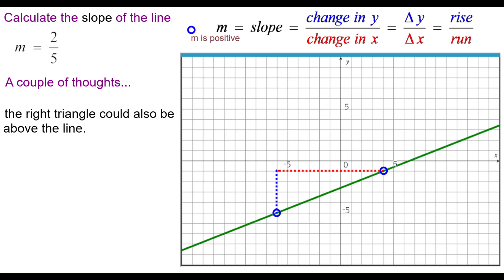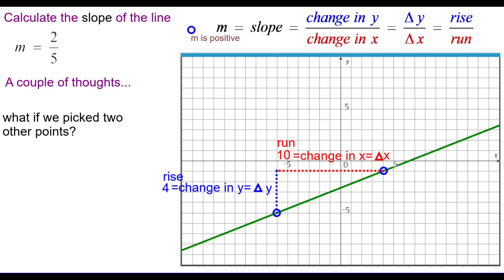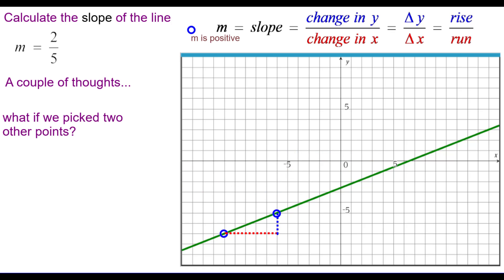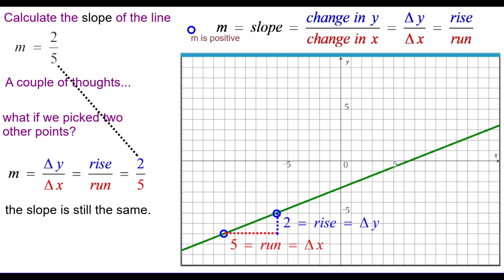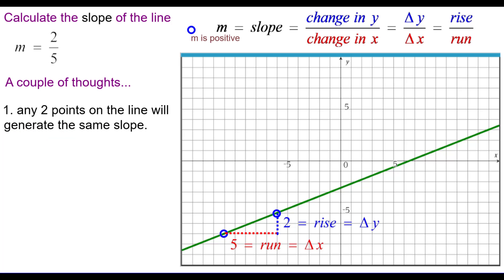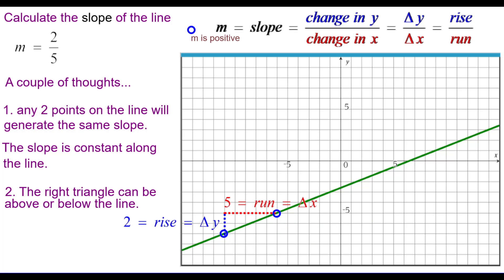A couple of thoughts: we could have drawn the right triangle above the line, and the slope would still be the same — 4 over 10, or 2 over 5. What if we picked two other points on the line? The change in y would be 2, the change in x would be 5, giving us 2 fifths again. So any two points on the line will generate the same slope — the slope is constant along the line. The right triangle can be above or below the line; either way you get the same slope.